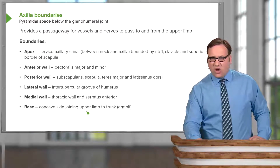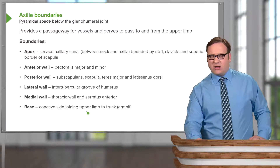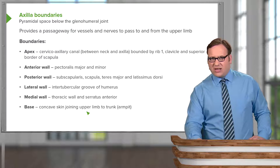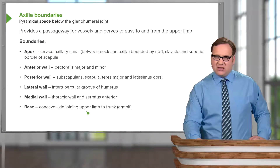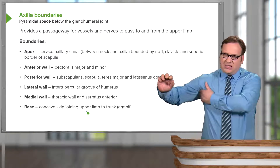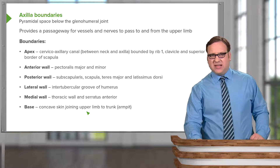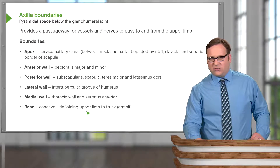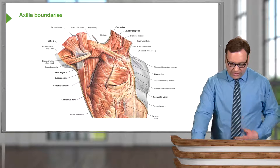The base is the concave skin joining the upper limb to the trunk — those axillary folds of skin passing from the trunk medially to the arm laterally. You can physically hold on to these pieces of skin as they pass from the chest wall to the upper limb. These form the base, and putting your hand within these folds of skin is your armpit.